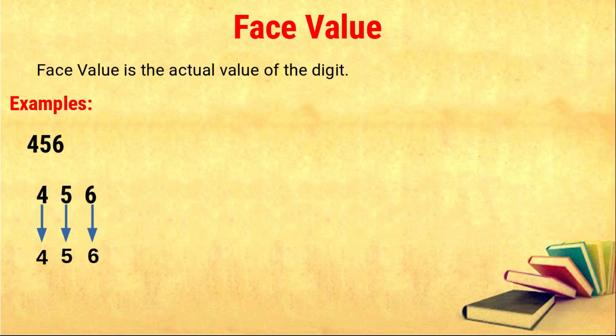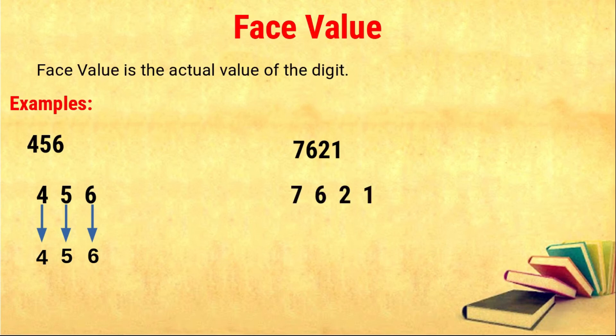Now we will see another example. The given number is seven thousand six hundred and twenty one. We know that the face value is the actual value of the digit. So for one the face value is one, for two the face value is two, for six the face value is six, and for seven the face value is seven.